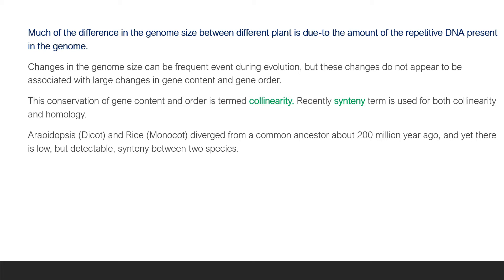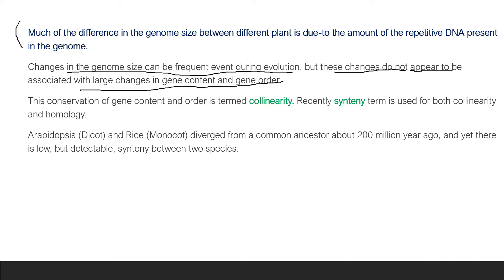Much of the difference in genome size between plants is due to the amount of repetitive DNA present in the genome. Changes in nuclear genome size can be a frequent event during evolution, but these changes do not appear to be associated with large changes in gene content or gene order. This conservation of gene content and order is termed colinearity, also known as synteny.